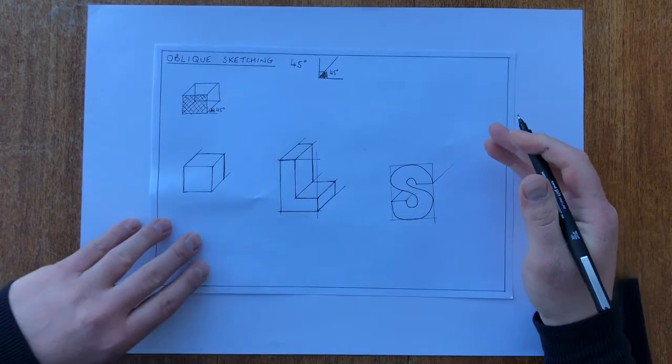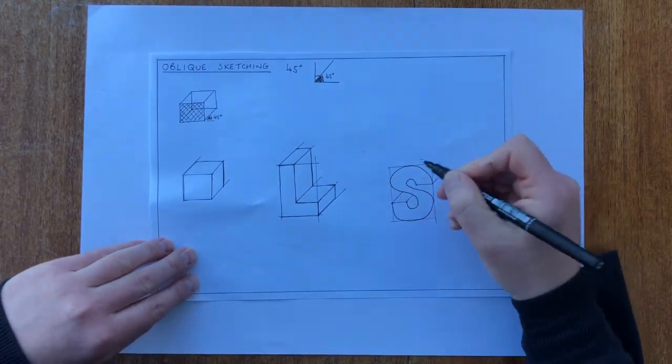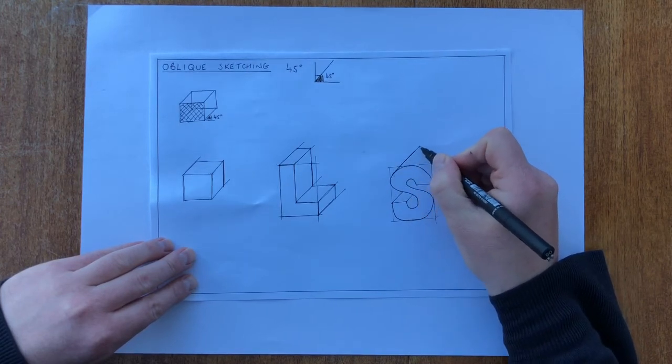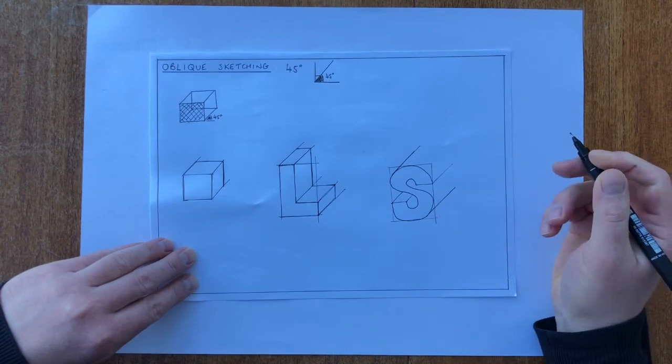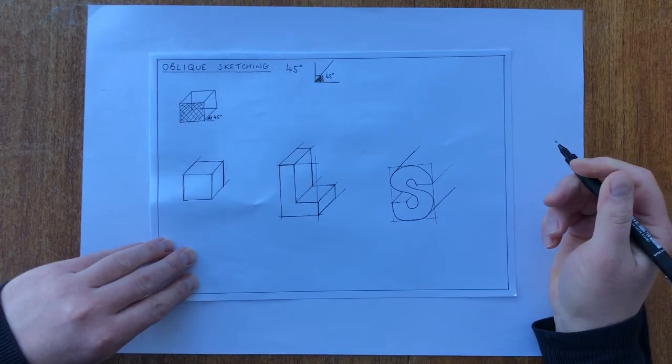We also need to take points from the edges as well at a tangent. So from this point here we want to take a line at 45 degrees. If I look at this point here, a line at 45 degrees. And then it's time to finish off the drawing.